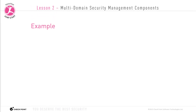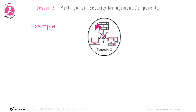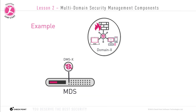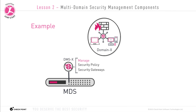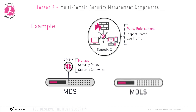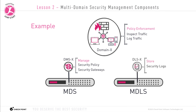As an example, imagine we have domain X — a customer environment containing a few gateways — being managed by DMS-X, a domain management server stored on the MDS server. DMS-X on the MDS server manages domain X's security policies, security gateways, etc. DMS-X contains the security database that will manage and install the security rule base for domain X's security gateways. Domain X's security gateways inspect traffic and send logs to the log server — in this case, DLS-X, the domain log server running on the MDLS server.